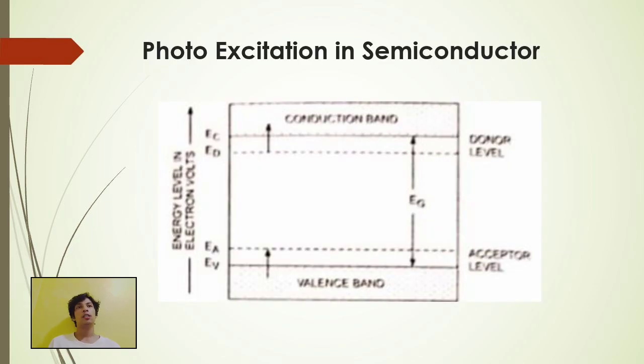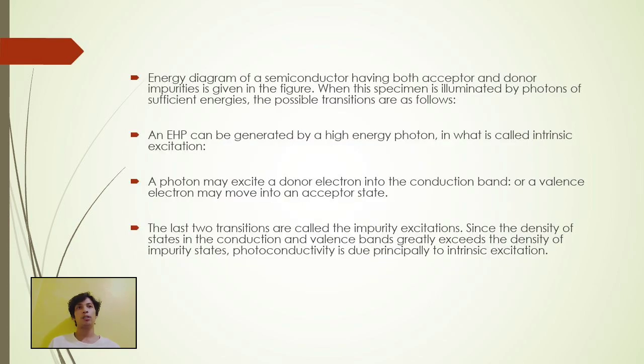Photo excitation and semiconductor. Energy diagram of semiconductor having both acceptor and donor impurities is given in the figure. When this specimen is illuminated by photons of sufficient energies, the possible transitions are follows. An EHP can be generated by high energy photons in what is called intrinsic excitation. A photon may excite a donor electron into a conduction band or a valence electron may move into an acceptor state. The last two transitions are called impurity excitation. Since the density of states, the conduction and valence bands greatly exceeds the density of impurity states, for the conductivity is due principally to intrinsic excitation.